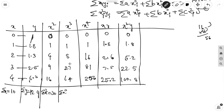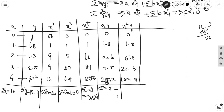Σx³ = 0+1+8+27+64 = 100. Σx⁴ = 0+1+16+81+256 = 354. Σxy = 0+1.8+2.6+7.5+25.2 = 37.1. Σx²y = 0+1.8+5.2+22.5+100.8 = 130.3.